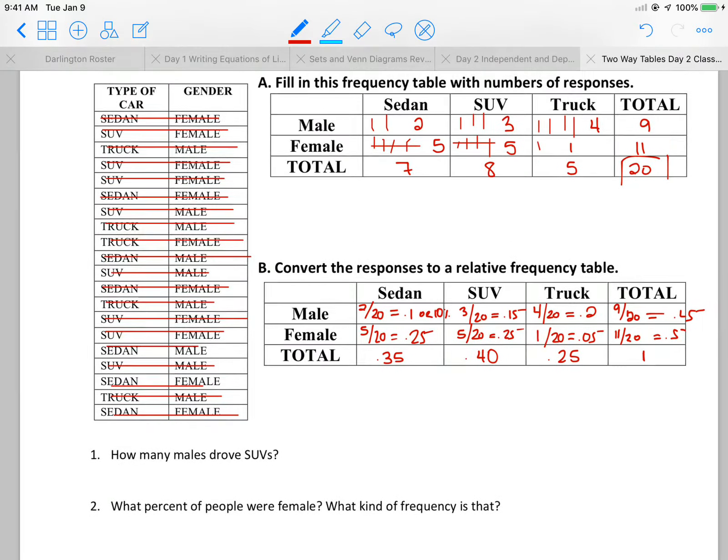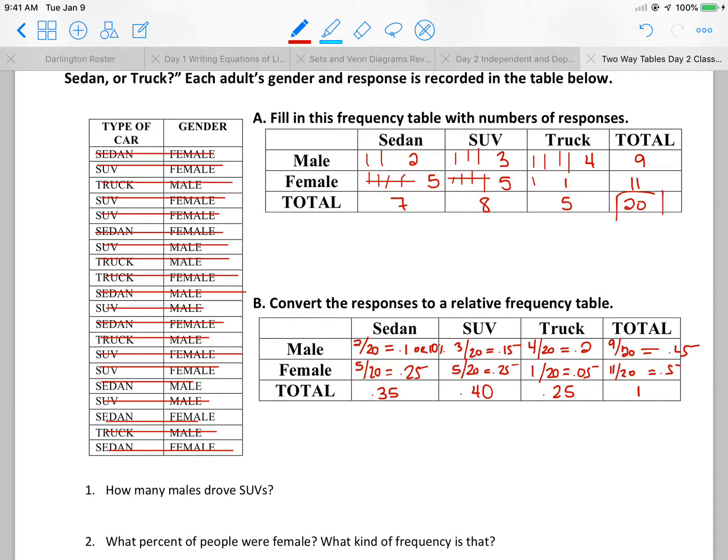So we've now created our frequency table and our relative frequency, a.k.a. joint probability, just taking off that whole piece and then making sure that it's accounted for.